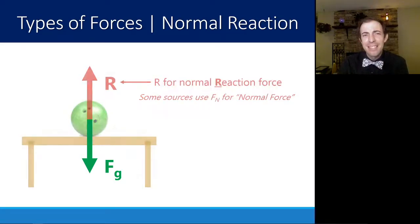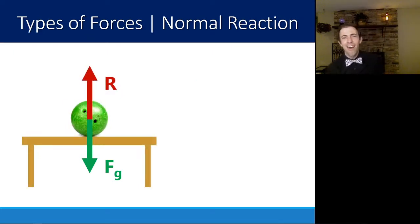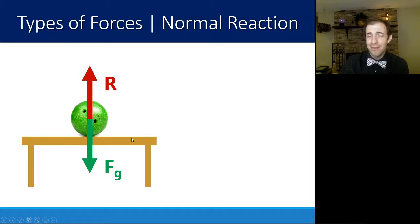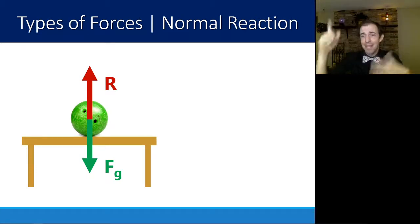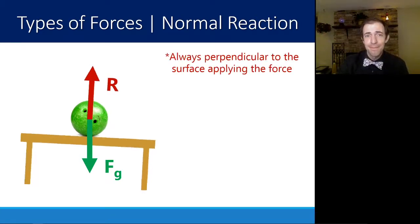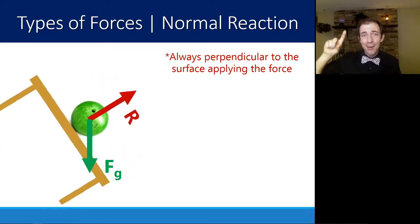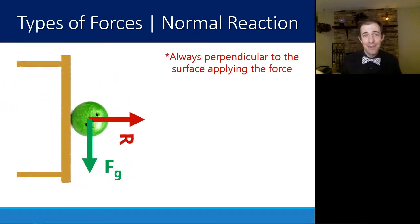Now, an interesting thing about R is that R being a normal reaction force applies the rules of math and geometry and something known as a normal line or something that is normal to a surface. Normal to a surface just means that it is perpendicular to the surface. So right now, if my table is perfectly flat, perpendicular is straight up. So if the table is horizontal, perpendicular to the table is up. But if I rotate the table,